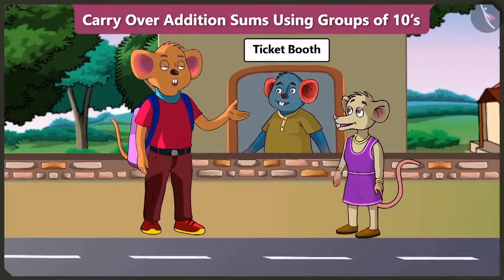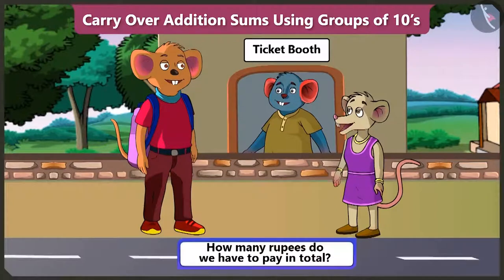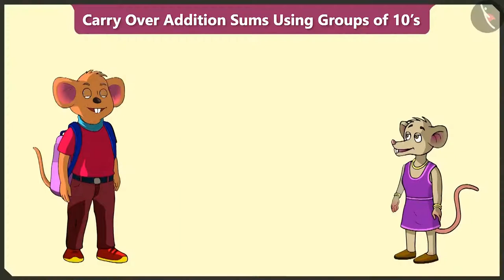Please give us two tickets to the zoo. Choo-choo, you are older, so your ticket will be 48 rupees and for this child, the ticket will be 24 rupees. So, Choo-choo, how many rupees do we have to pay in total? For this, we have to add 24 to 48. How do we do that?